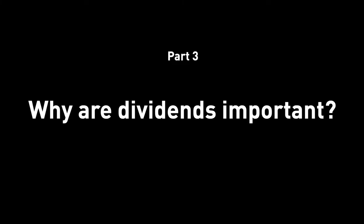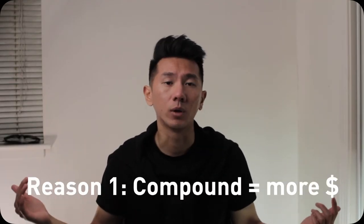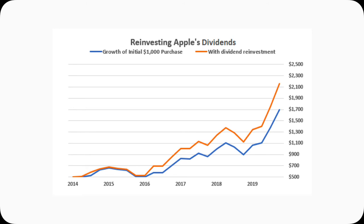Part 3: Why are dividends important? It's important because it compounds. Your growth with dividends is not linear — it curves up. It creates a flywheel, an incredible flywheel over a long period of time, and that just means more money for you. Looking at this chart — the blue line is Apple's stock growth, and the orange line is the stock growth with dividends reinvested. The difference is pretty obvious and visual: with dividends reinvested, you get a higher return.